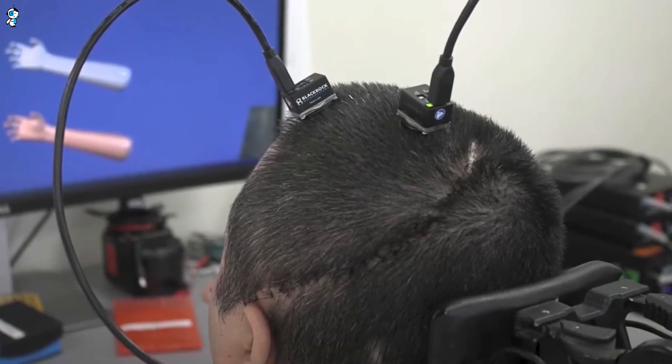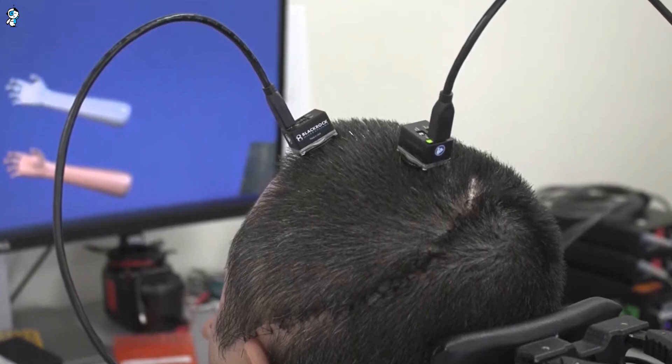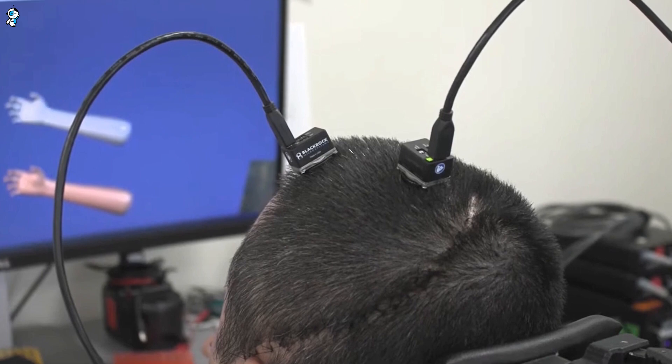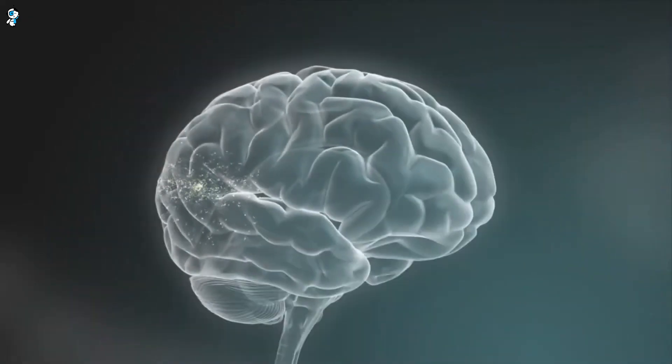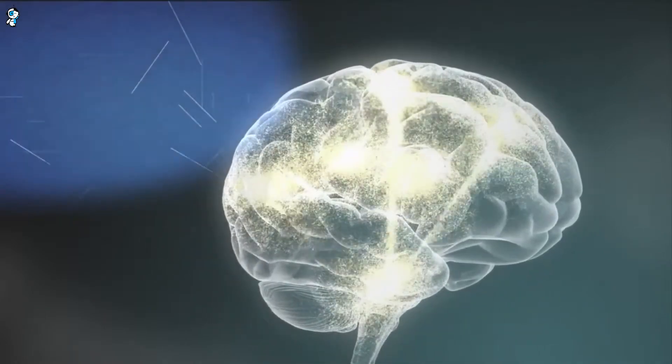To put the N1 through its paces, Neuralink has enlisted paralyzed volunteers to test controlling a computer cursor and keyboard using brain signals alone. This level of functionality would be life-changing, granting independence to those with limited mobility.